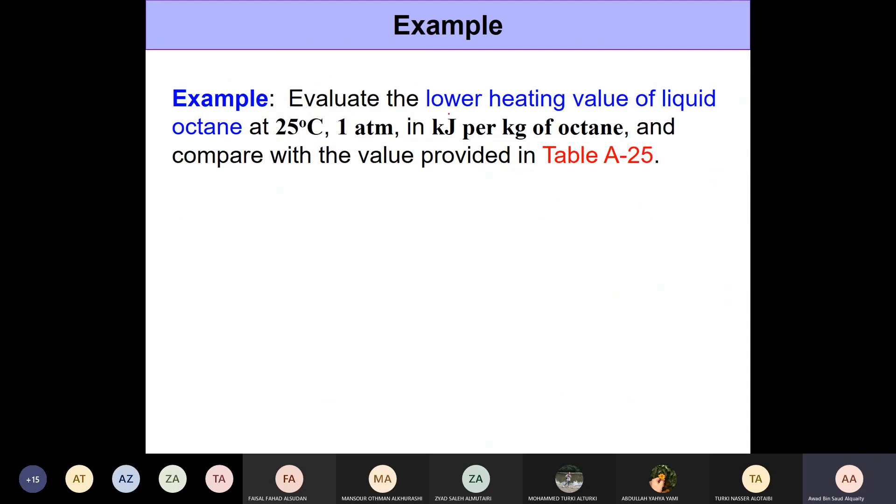Here we need to evaluate the lower heating value of liquid octane at 25 degrees Celsius, 1 atm, in kilojoule per kilogram of octane. This is typically how we do it - in kilojoule per kilogram of fuel or kilojoule per kilomole of fuel. Once we do that we need to compare it with the value provided in Table A-25.